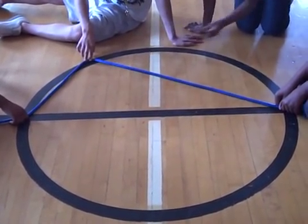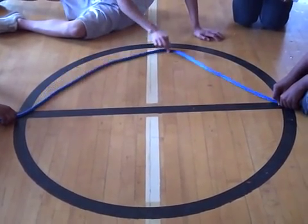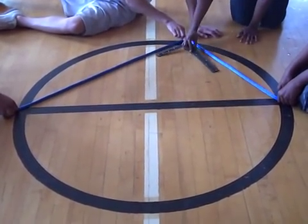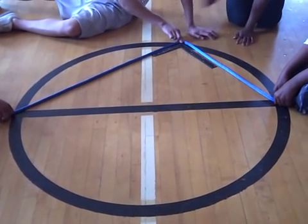All right. Now we'll move it to another place on the circle, say there. And we'll put the angle iron down again. And look, it's a right angle again.